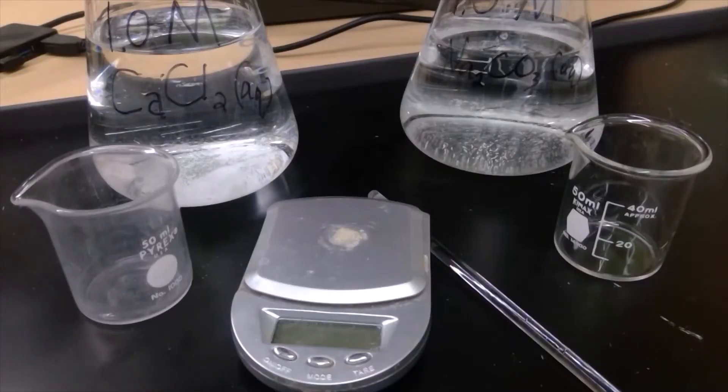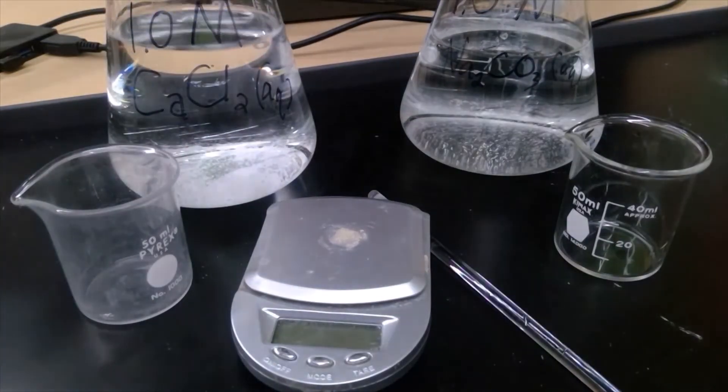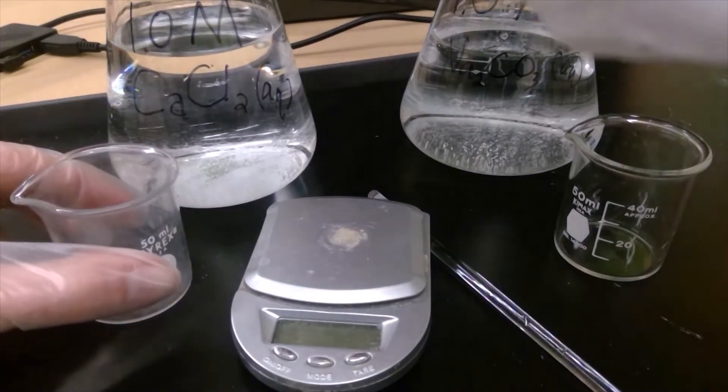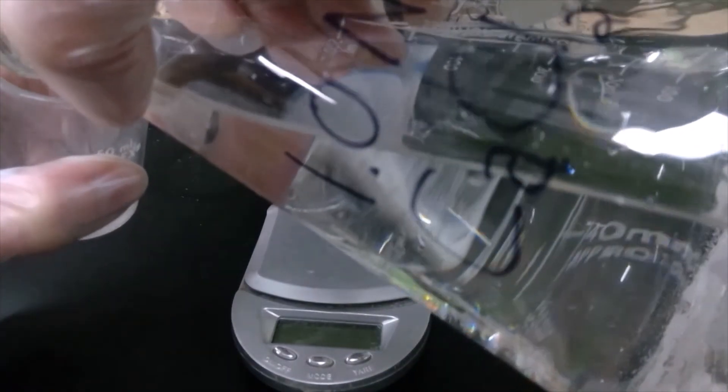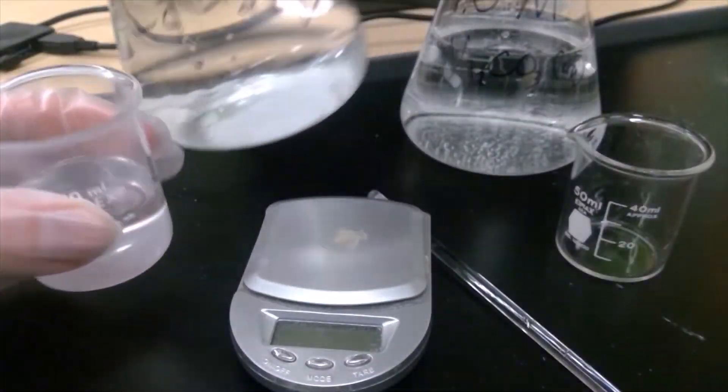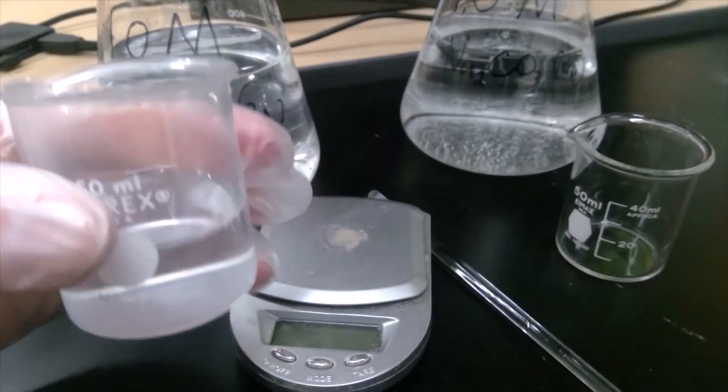Measurement number five: two mixtures in one. In this flask, I have a calcium chloride solution. What observations can you make about this liquid?